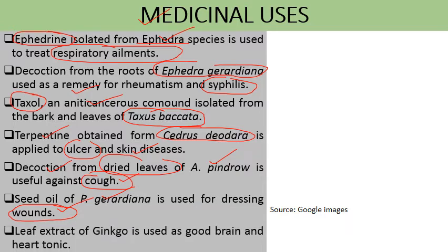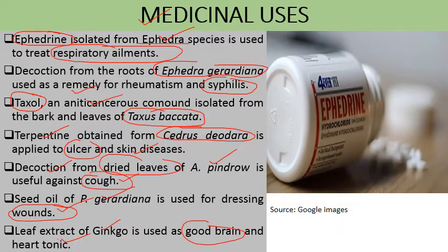Many leaf extracts have medicinal value. For example, the leaf extract of Ginkgo is used as a good brain and heart tonic. Ephedrine is also used to treat respiratory disorders.